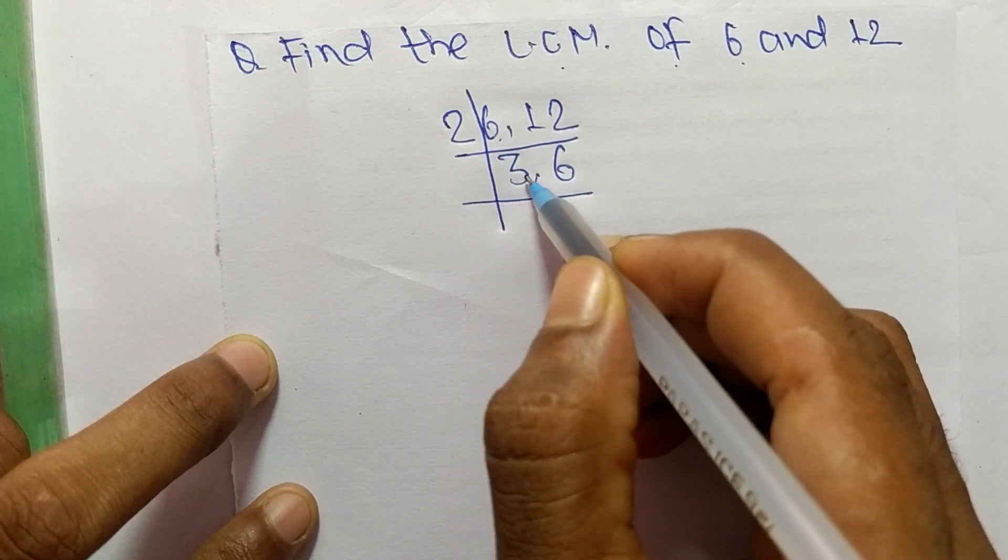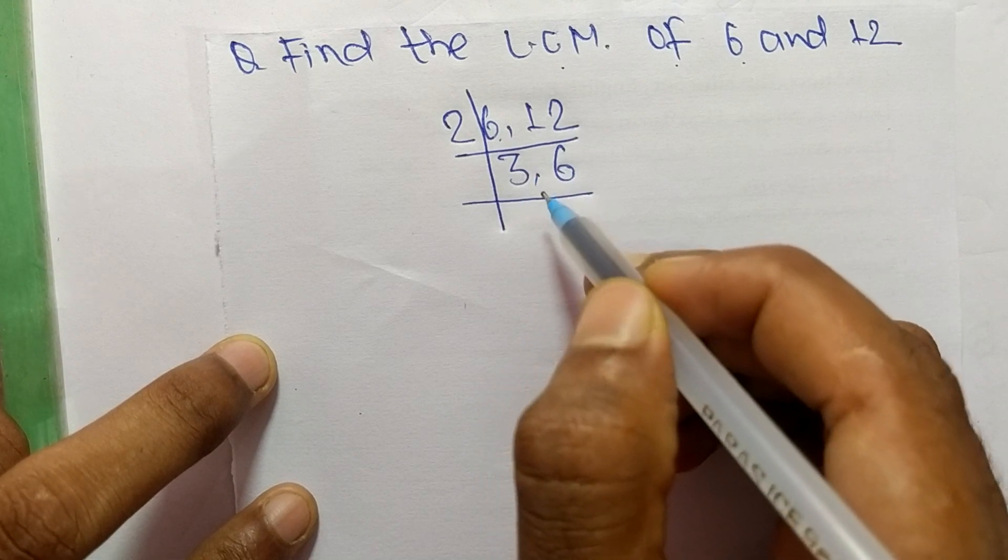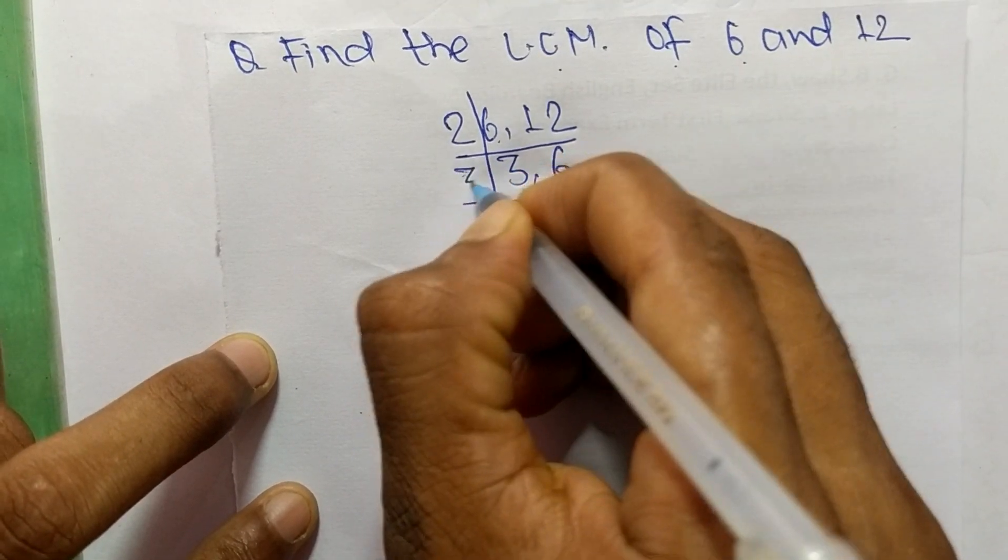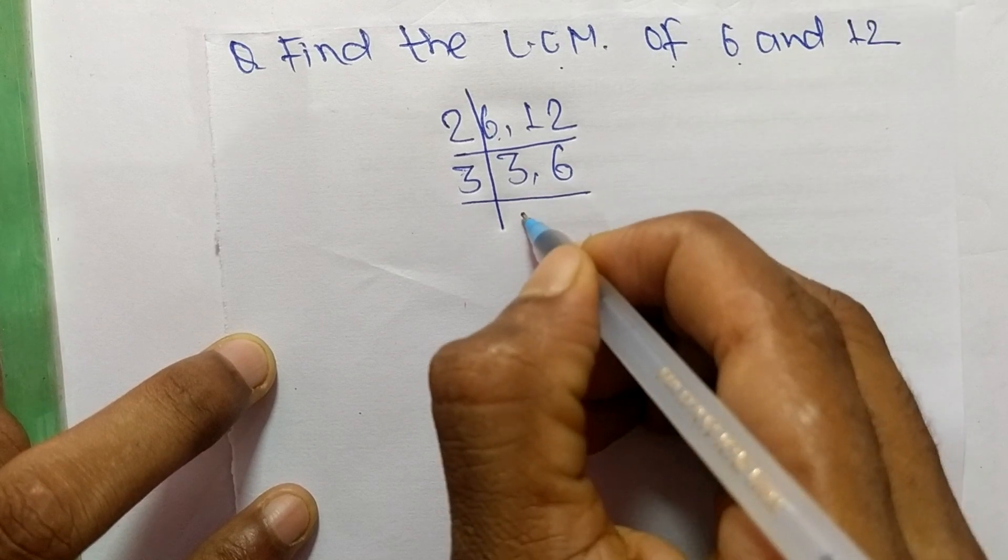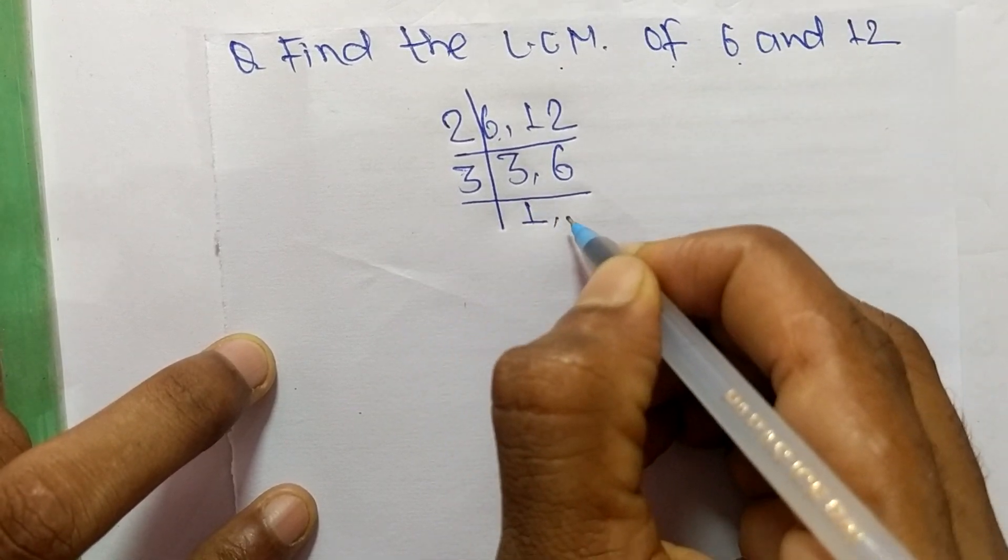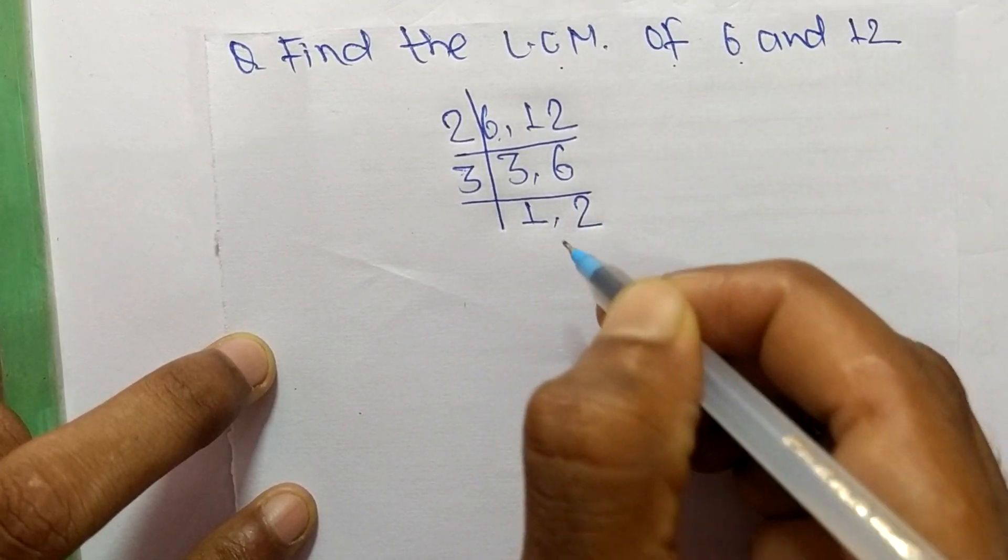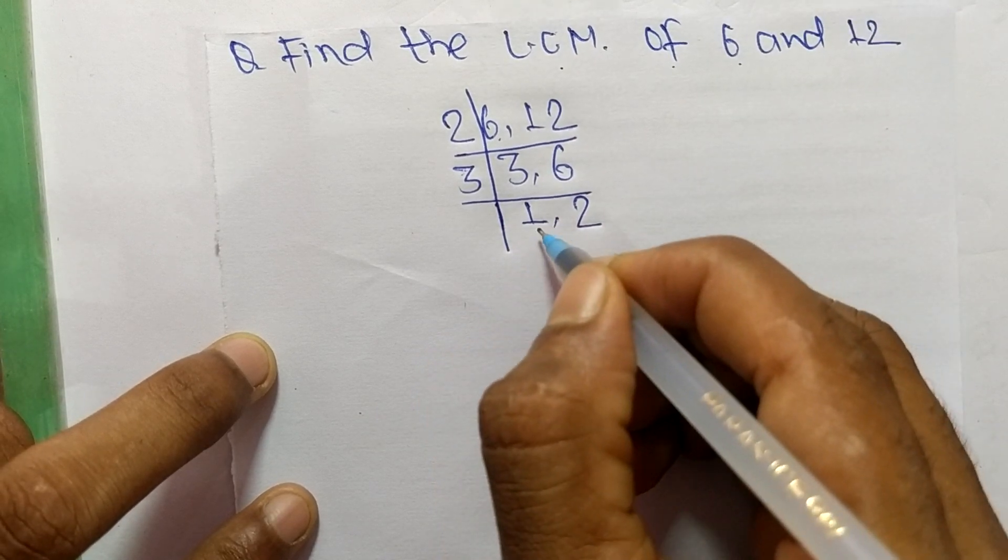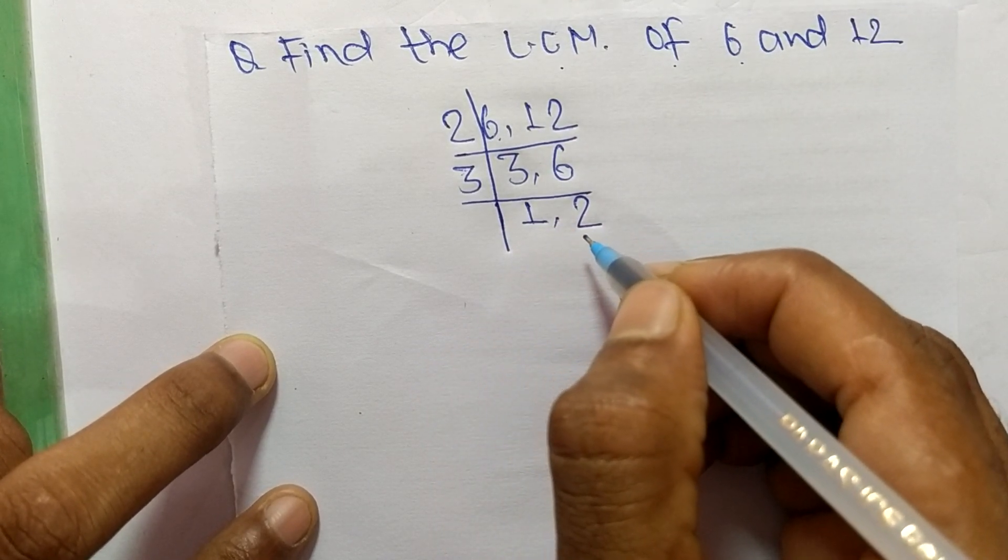So 3 can divide 3 and 6 both, so we take here 3. So 3 times 1 means 3, and 3 times 2 means 6. So now we get here 1 and 2, which are not exactly divisible by the same number.